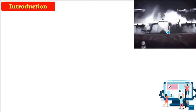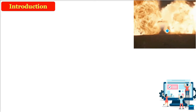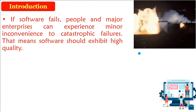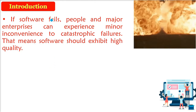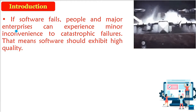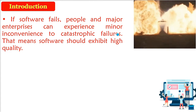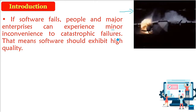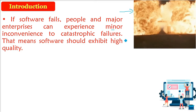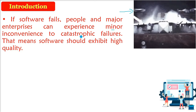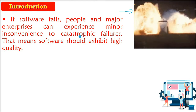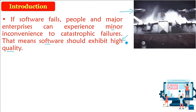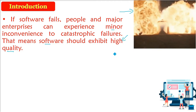This is a picture of catastrophic failure. This can be a result of anything, but we don't want it to fail because of our software. If the software fails, some individuals and enterprises may experience minor inconvenience, but sometimes it may be catastrophic — people will die. So your software should exhibit high quality. Quality is the key.